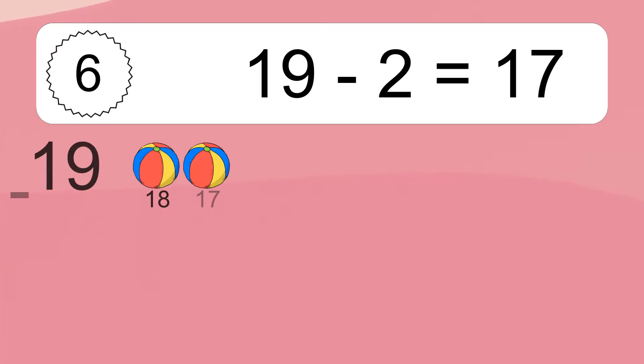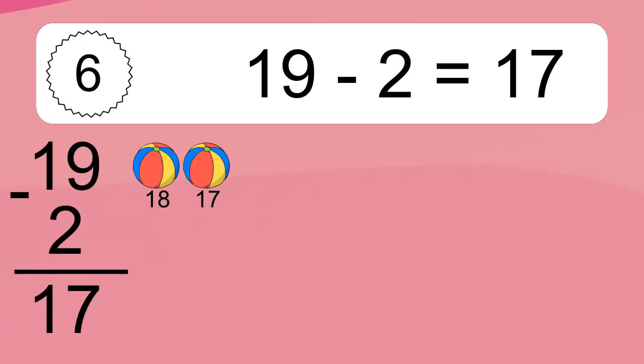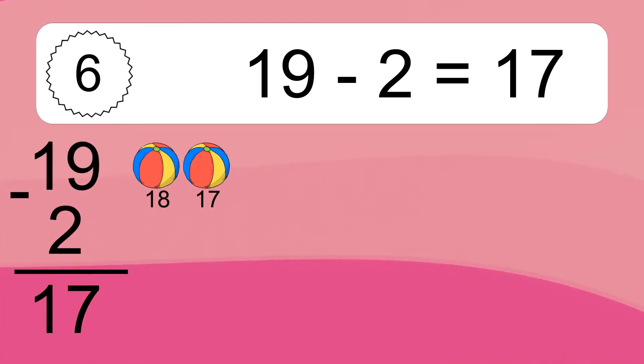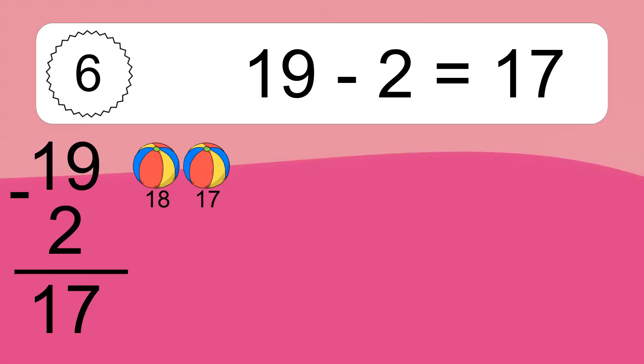19 minus 2 equals what? 19 minus 2 equals 17. Let's count it: 18, 17.